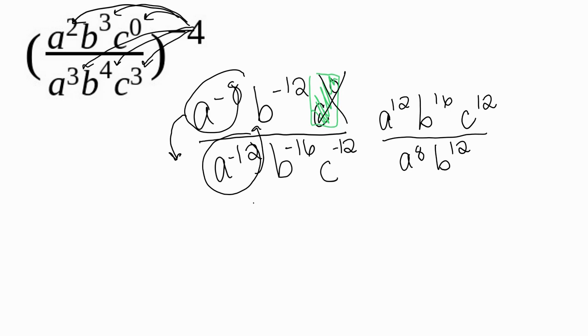Now I'm ready to apply my exponent rule that says, when I divide powers of the same base, I will subtract my exponents. So I'll continue my work over here. I notice that I have the same base right here. I have a to the 12th power divided by a to the 8th power. So I can subtract my exponents. 12 minus 8 is 4. So now I have a to the 4th power.